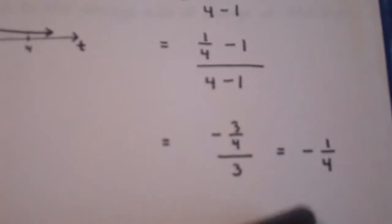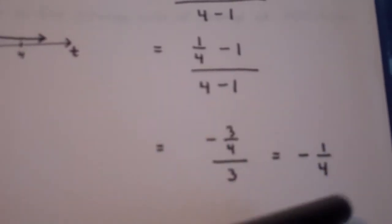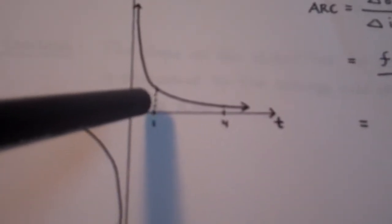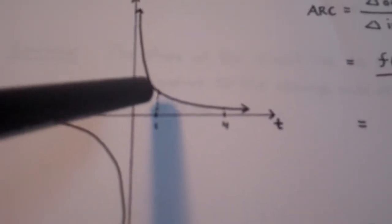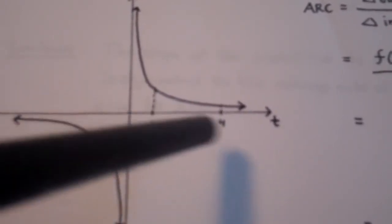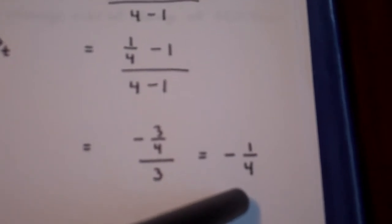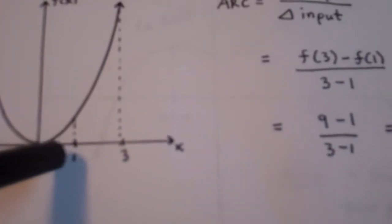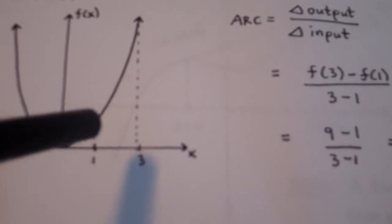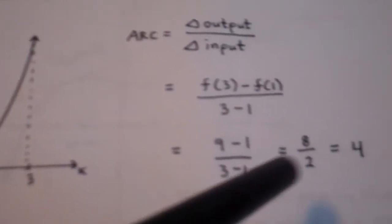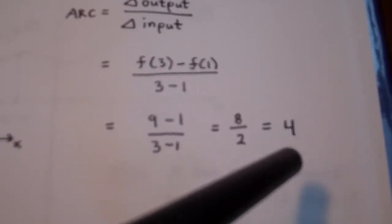To divide a fraction by a whole number, you keep the top the same and multiply by the reciprocal of the denominator, giving an answer of negative 1/4. The answer is negative because the function decreased in value from the starting point to the ending point — anytime your function decreases, your average rate of change will come out negative. In the previous example, the function increased, so the average rate of change was positive.